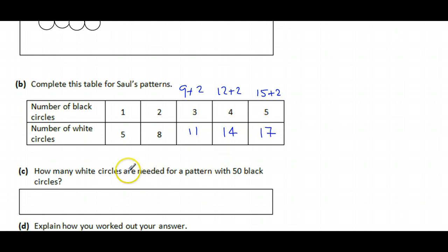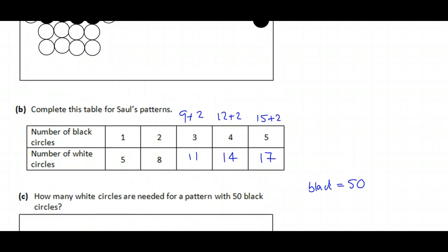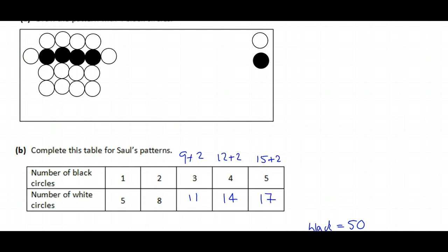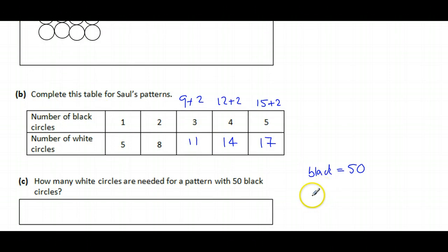Well, the number of black circles for pattern number 50, the number of black circles, it's going to be 50, isn't it? Because that's what's going to go across the middle. And then above it we're going to have a line of 50 white, below it 50 white, and another line of 50 white. So for the number of white we're going to get...